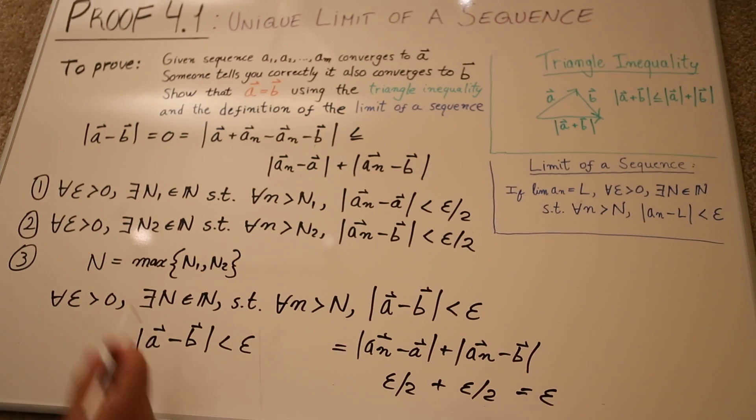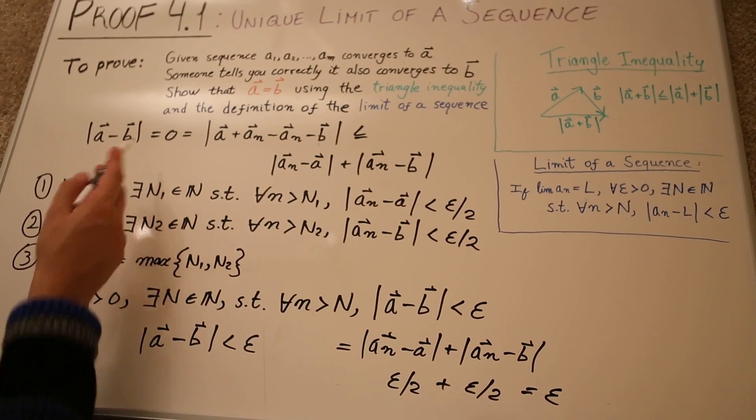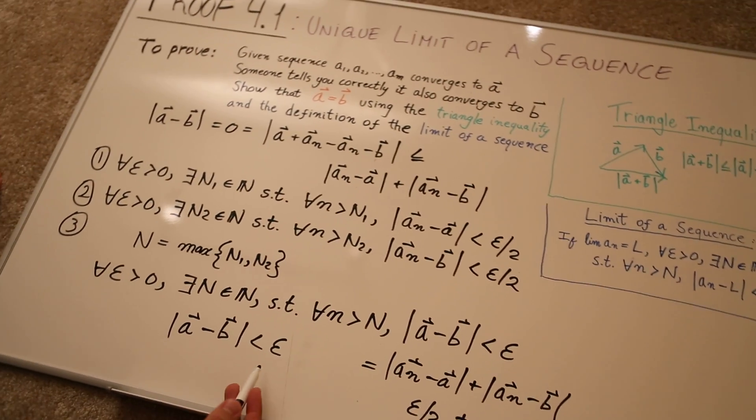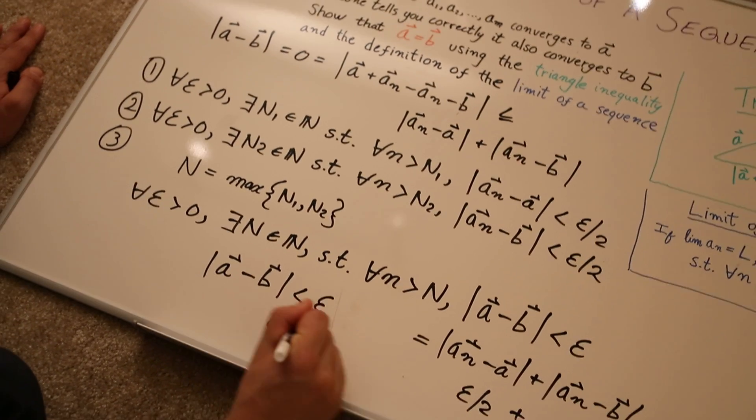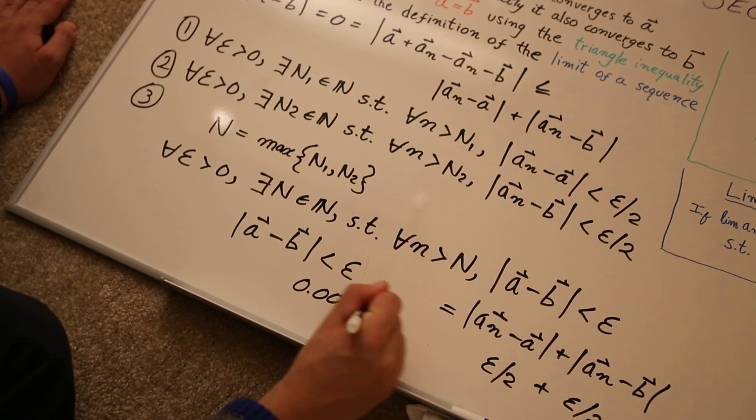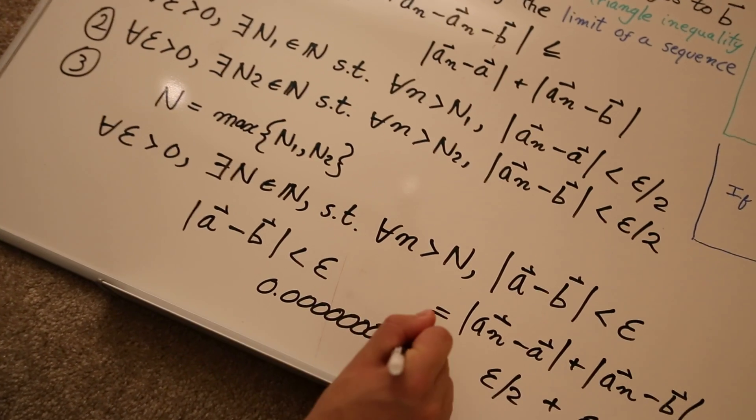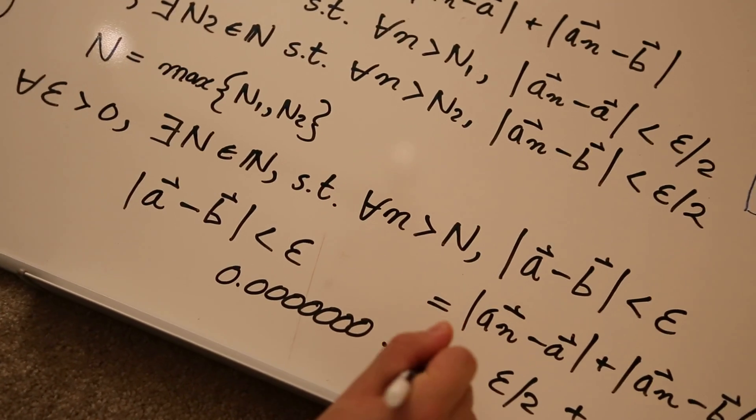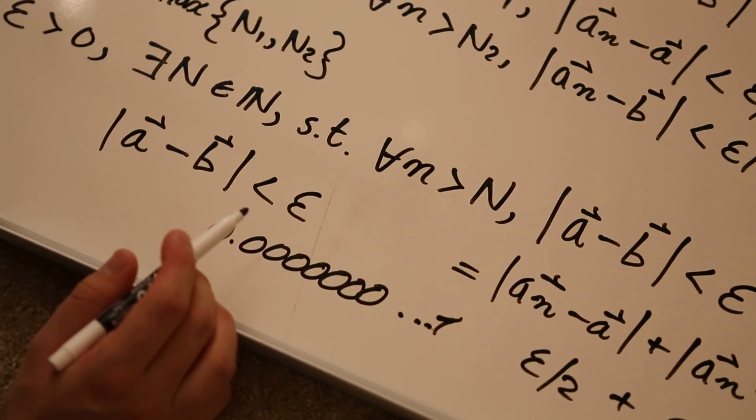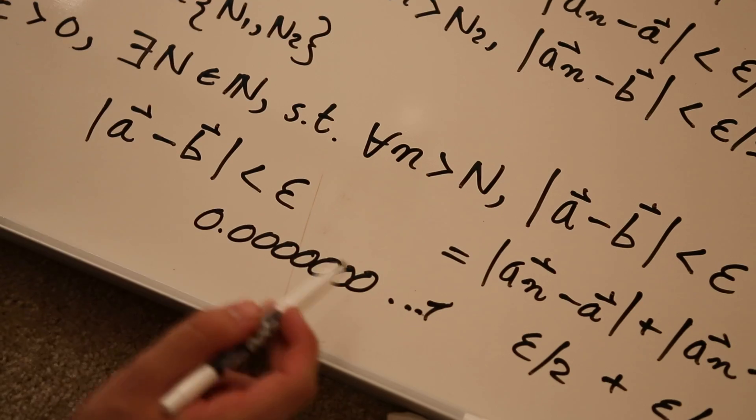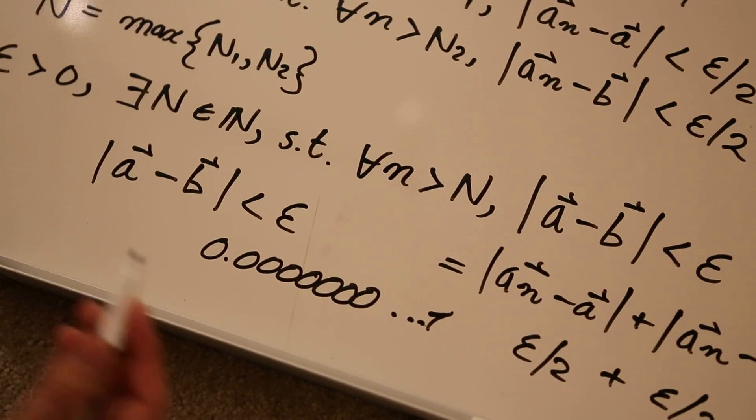And how does that tell us that A minus B is equal to zero? Well, we're saying epsilon can be any positive number. I can just make epsilon as small as I want. I can put three thousand zeros here and then a one, okay? And that's still going to be a positive number. But it's so close to zero, and it's still less than their difference. There's only one conclusion.